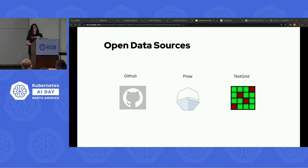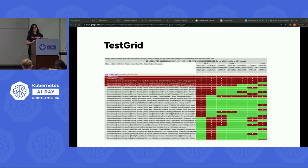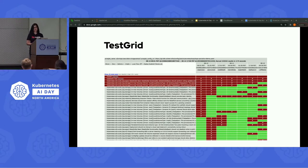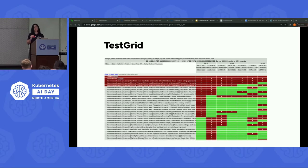Now let's move to our final data source, that is TestGrid. TestGrid is an open source visualization platform developed by Google to help various communities track the status of their tests and visualize the builds in a friendly format. So where does it fit in the context of a CI process? TestGrid is a dashboard which is an aggregation of multiple tests over a time period, and each cell represents whether a certain test was failing — that is red — or passing — that is green — or maybe not running, along with a few other possible states.